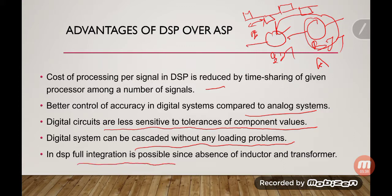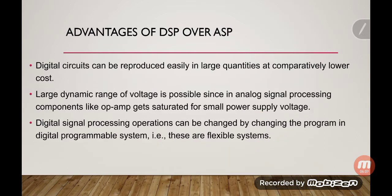In DSP, full integration is possible since there is an absence of inductors and transformers. You cannot integrate high values of inductance — such as micro or milli henry — on a chip, so DSP's lack of inductors and transformers makes full integration possible. Additionally, digital circuits can be reproduced easily in large quantities at comparatively lower cost because, using integrated circuits, you can build all the components on a single chip.